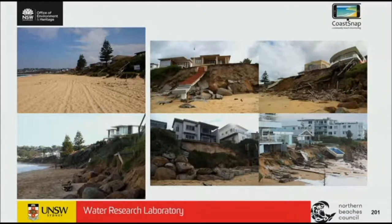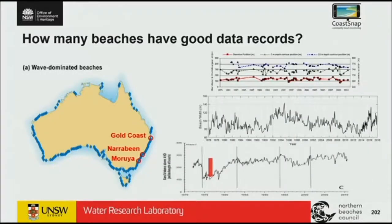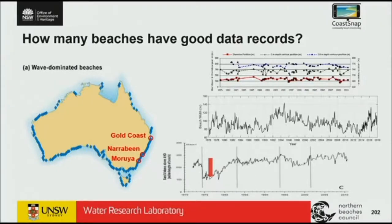We need to understand why different beaches respond differently to different wave conditions and different types of storms. So how many beaches do we have a good idea of how they work? 11,000 beaches — about three. Three beaches in Australia have long-term, frequent records of beach change. That's it. Narrabeen was the first one and captured the biggest storms on record in the 1970s. Collaroy-Narrabeen is probably the most famous data set — monthly surveys since immediately after that storm. And the Gold Coast has also been measuring beaches for quite some time. That's not really enough to apply to all of our other beaches.